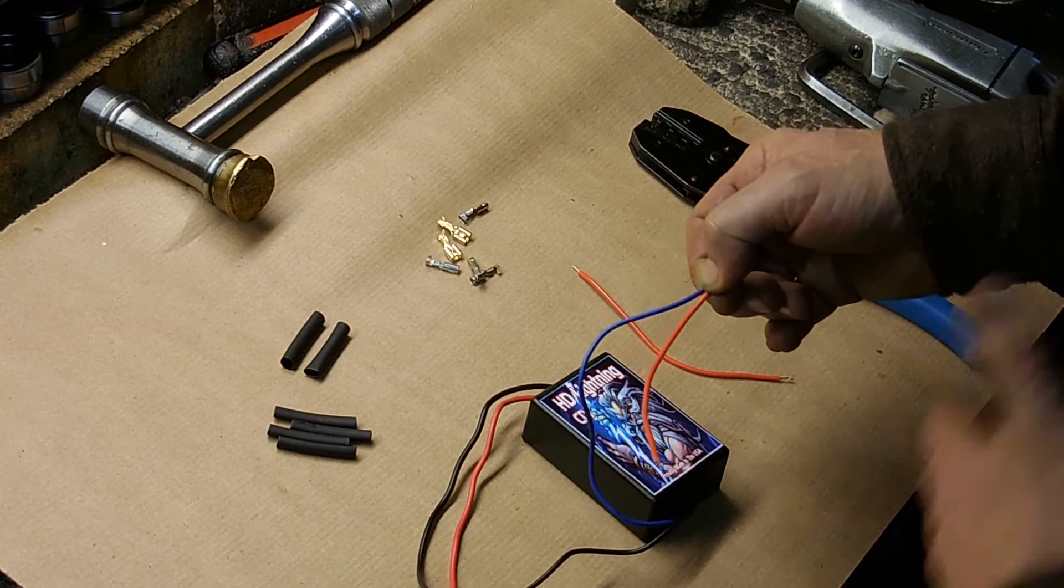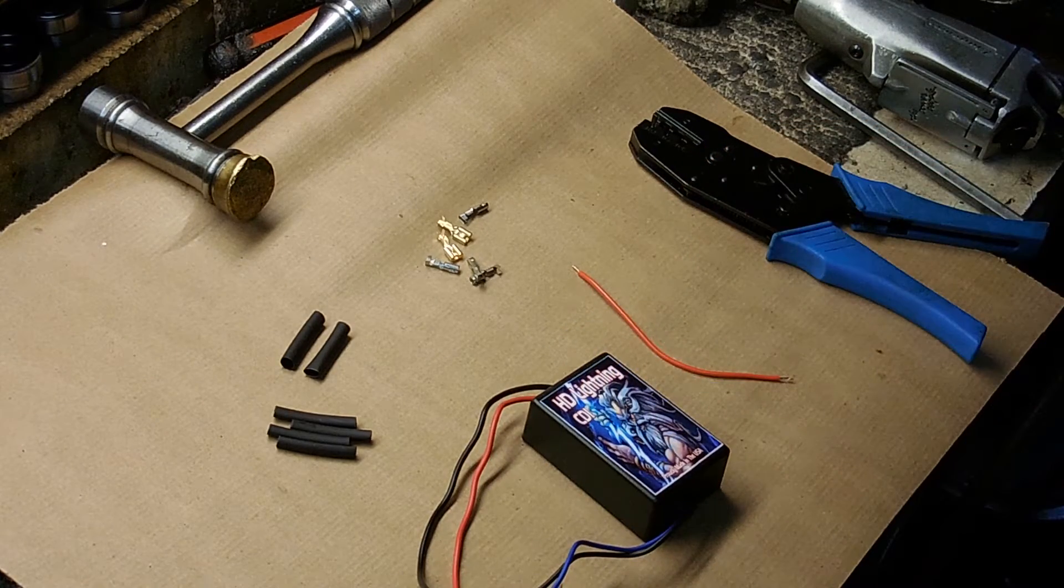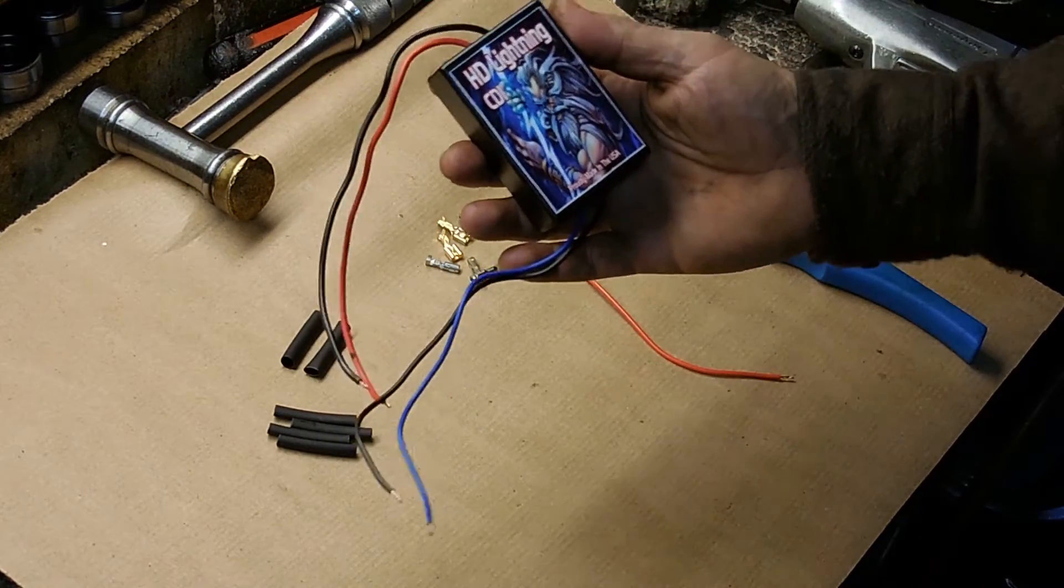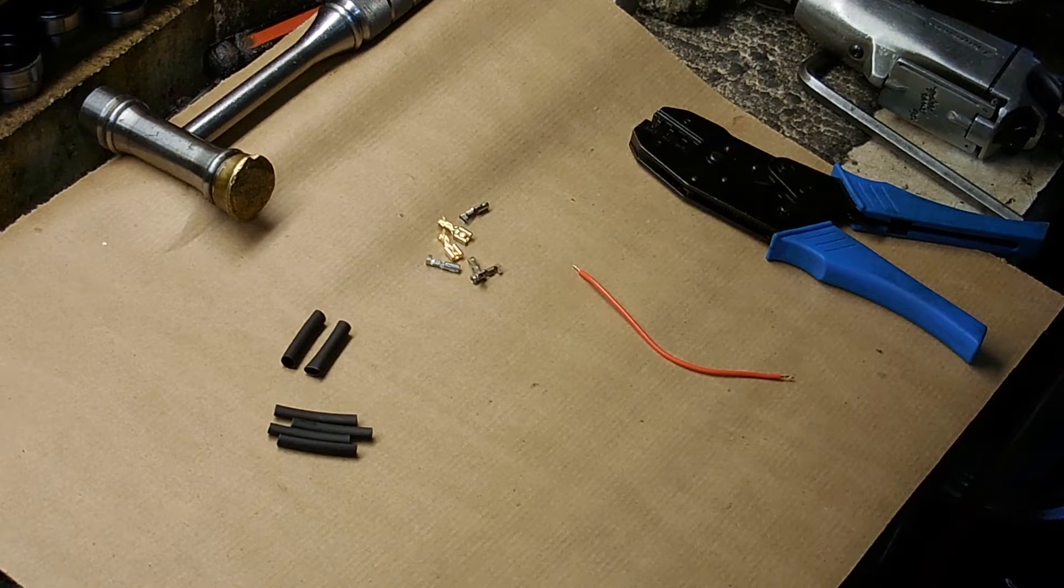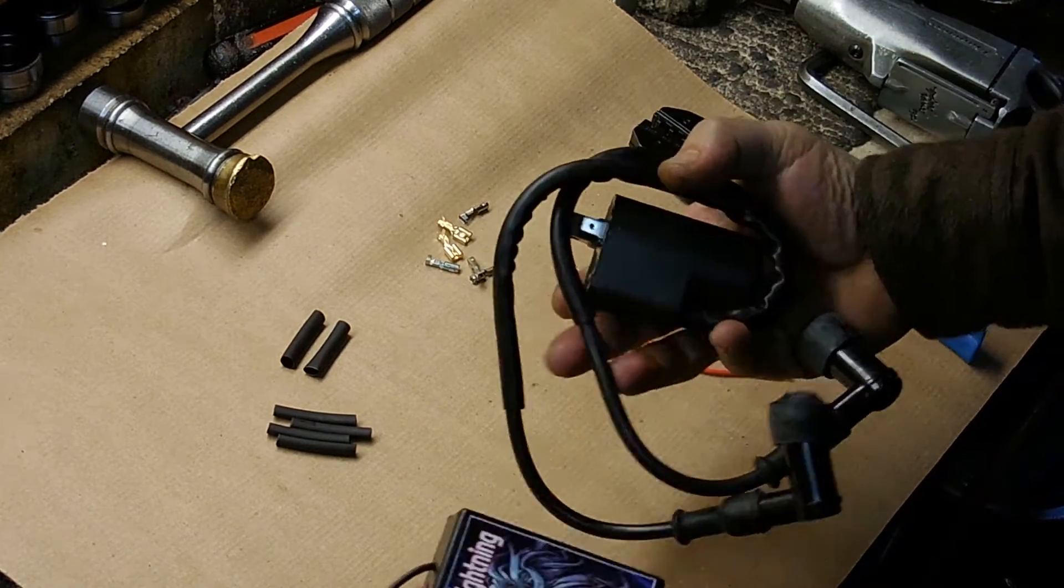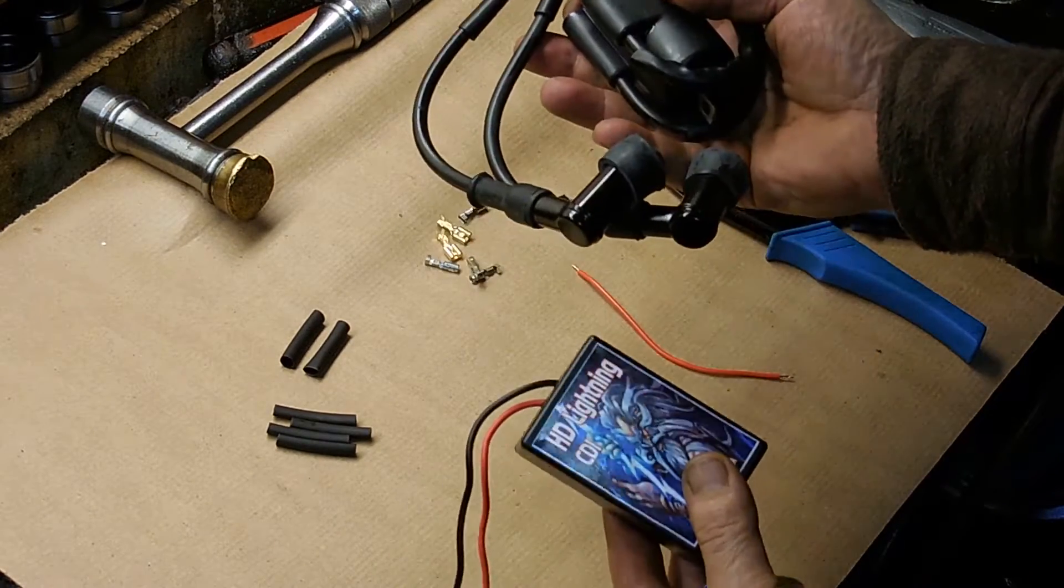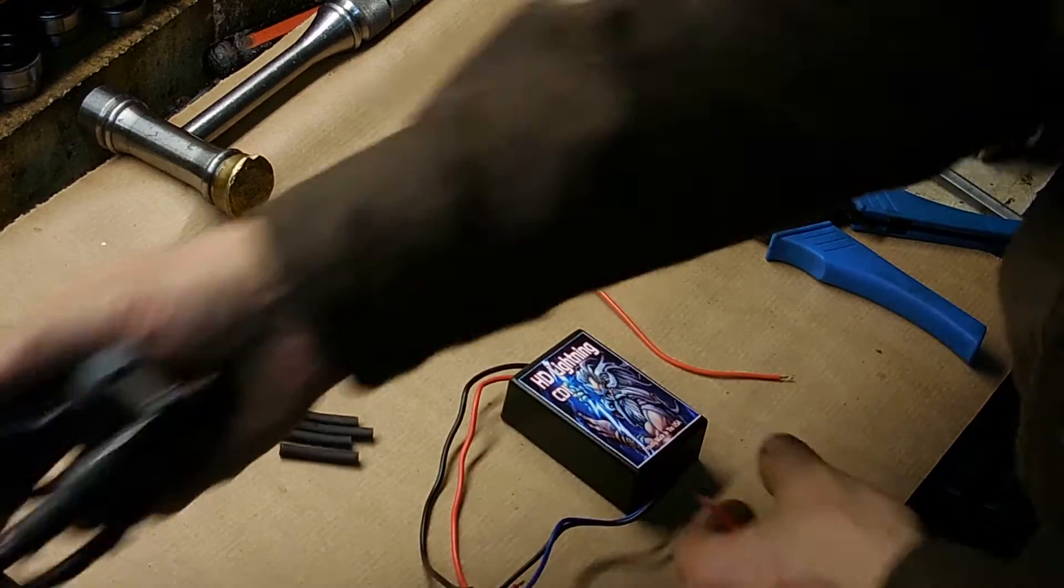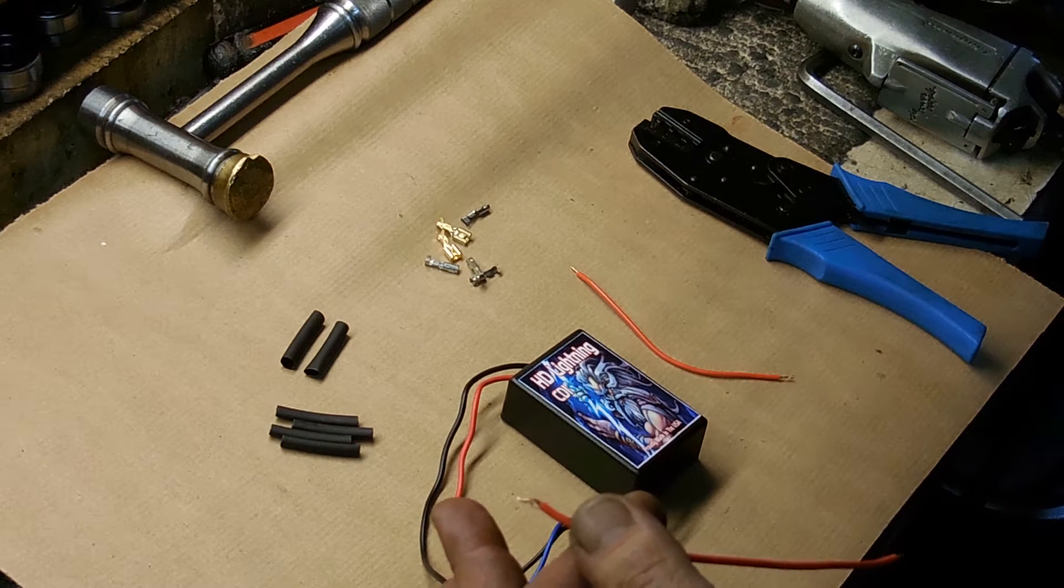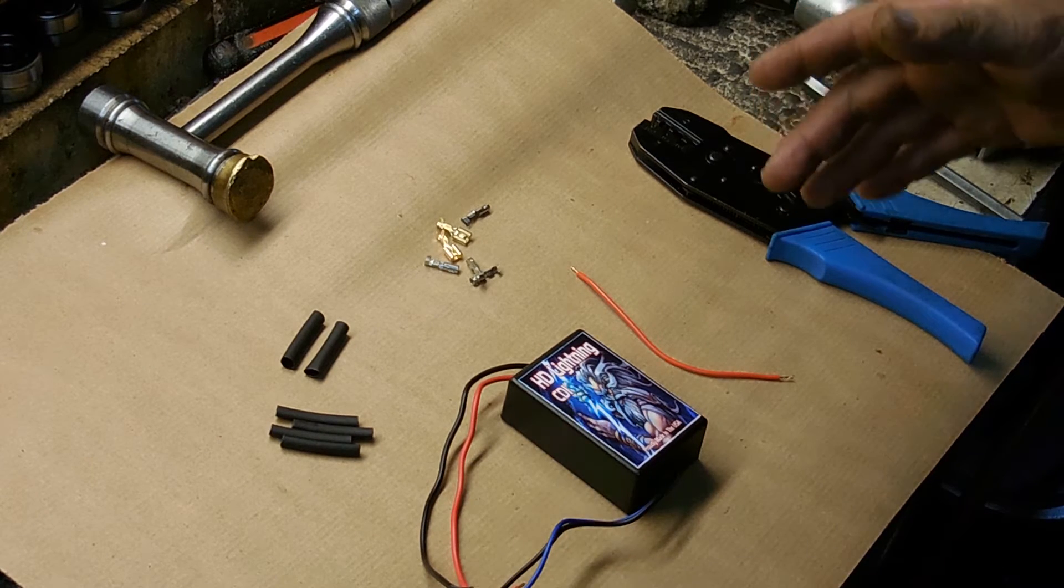You can buy it unprepared, meaning it'll just be the CDI and the coil. In this case, this is the Twin Ignition model. So we'll just put the coil off to the side, and I'm going to get right into what I do for the wiring.